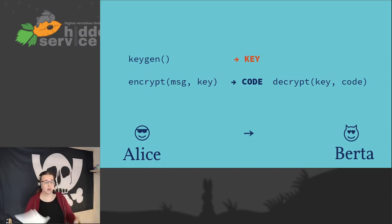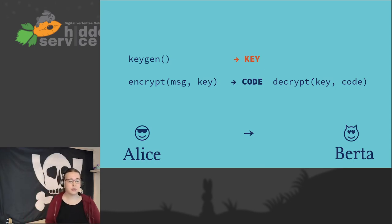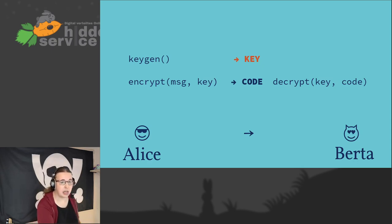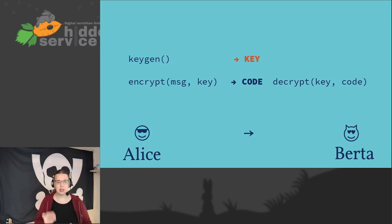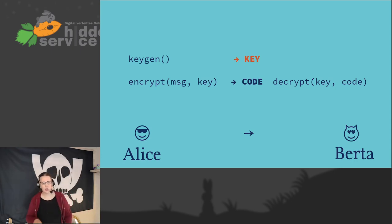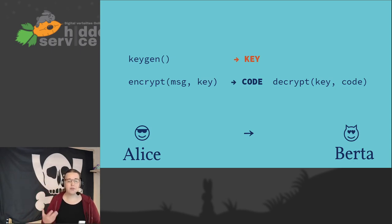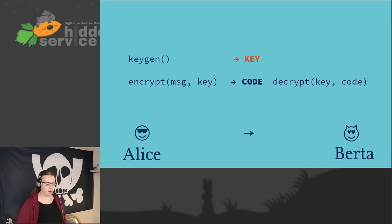Now let's use this to build a cryptographic protocol. Alice still wants to send her message to Berta. The first step is creating a key and transmitting it to Berta. This is the most crucial step — the key must be transmitted very securely. If the key is leaked, an attacker can read all transmitted data. Once the key is securely shared, it can be reused to send data securely in both directions.